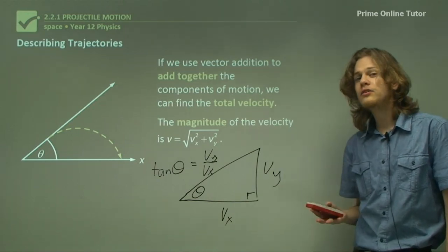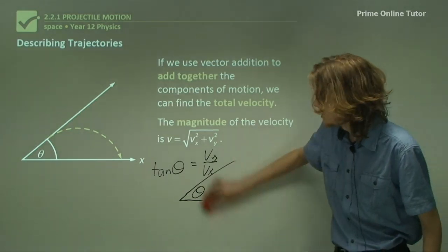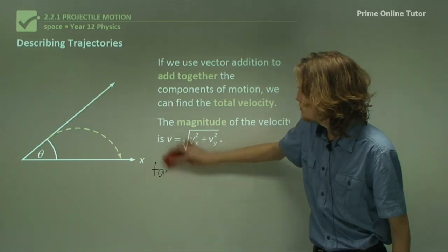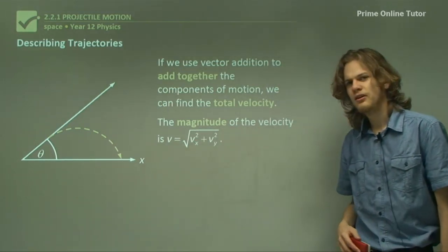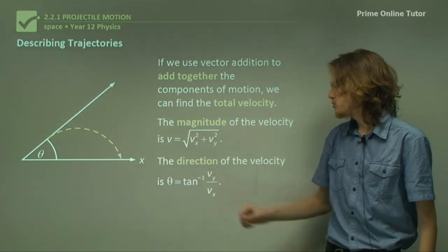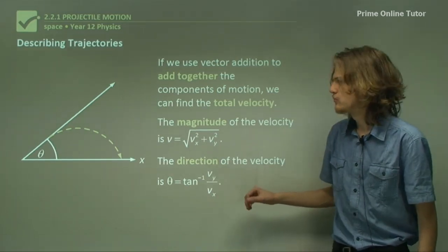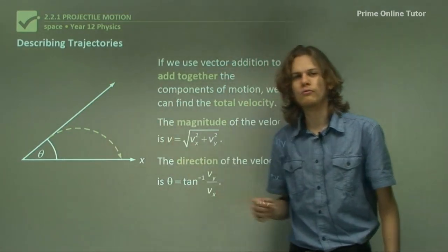If we wanted to make theta the subject of the equation, what would our equation look like? I'll give you a chance to write it down while I rub this off. Exactly right. It's theta equals tan minus 1 Vy over Vx. This will give us the angle of the total velocity.